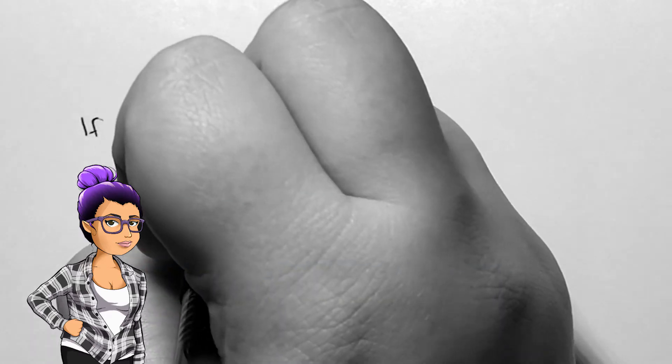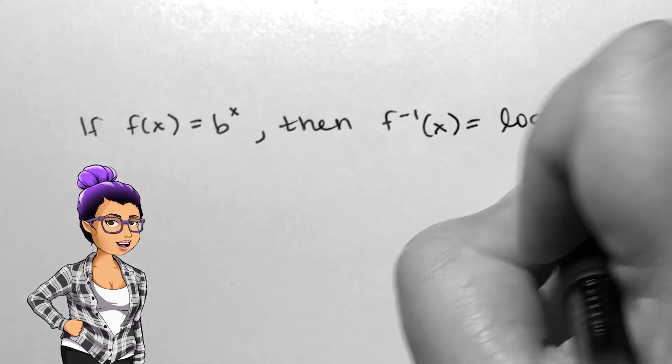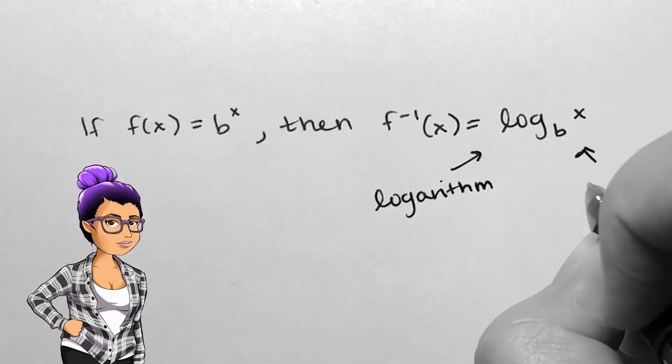If f(x) = b^x, then f inverse of x is log base b of x. The inverse of the exponential function is called a logarithm, and b is called the base of the log.